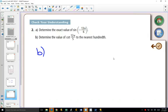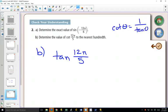You don't have buttons for the reciprocals. You don't have a button for cotangent. So what we have to do first is figure out tan of 12π over 5.